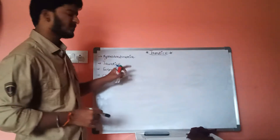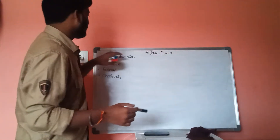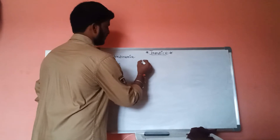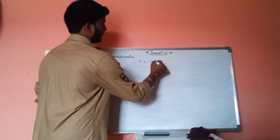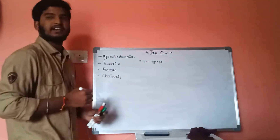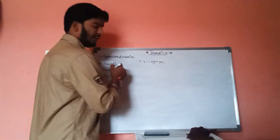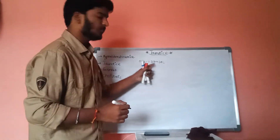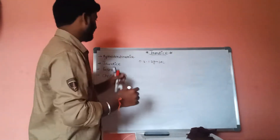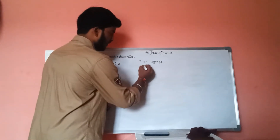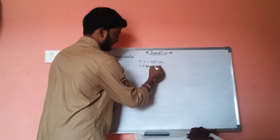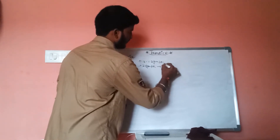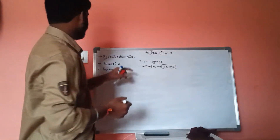First let us discuss hyperbilirubinemia. The normal range of bilirubin in our body is 0.2 to 1.2 grams per deciliter. Whenever the bilirubin concentration in our blood is more than 1.2, it is not considered as hyperbilirubinemia, but whenever it is more than 2.5 grams per deciliter, it is considered as hyperbilirubinemia.